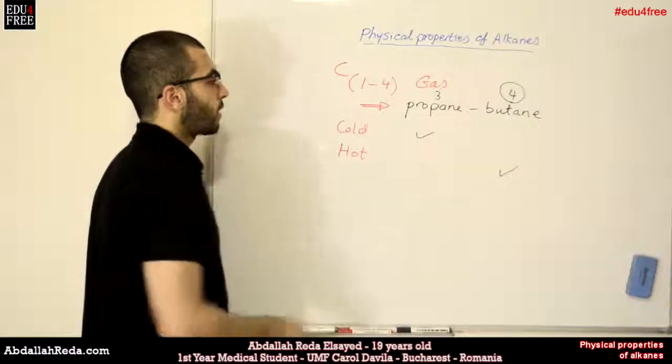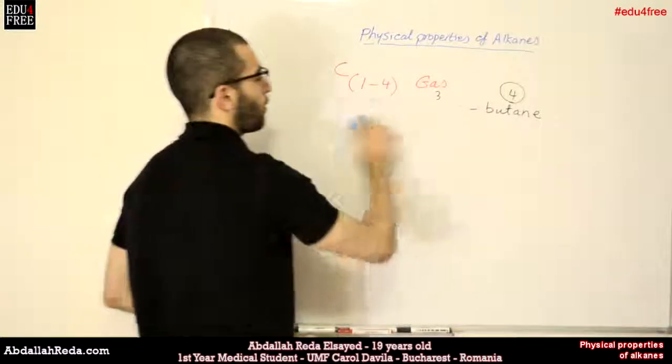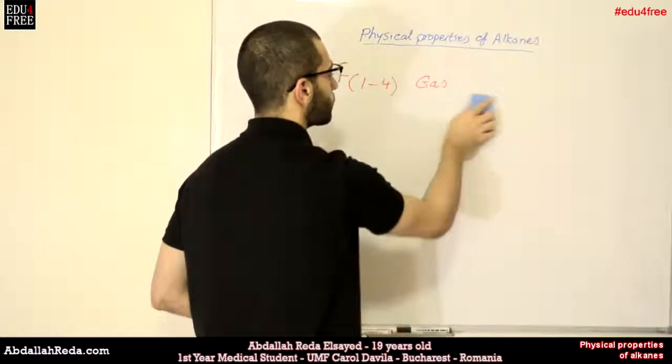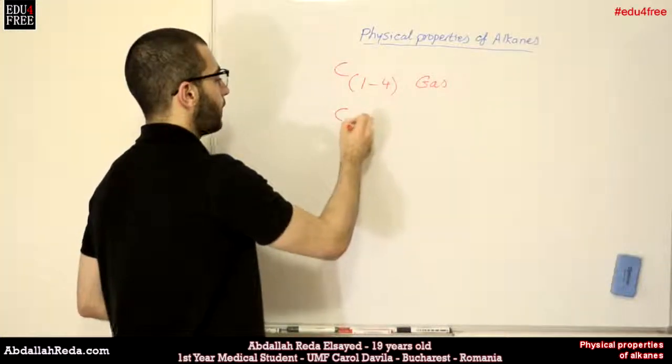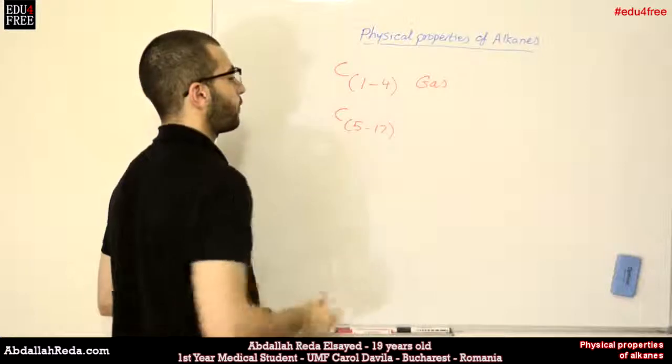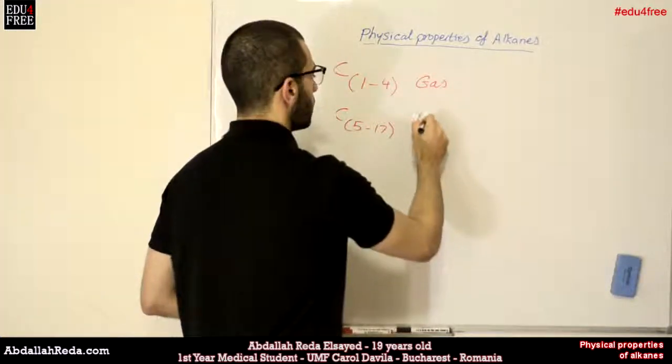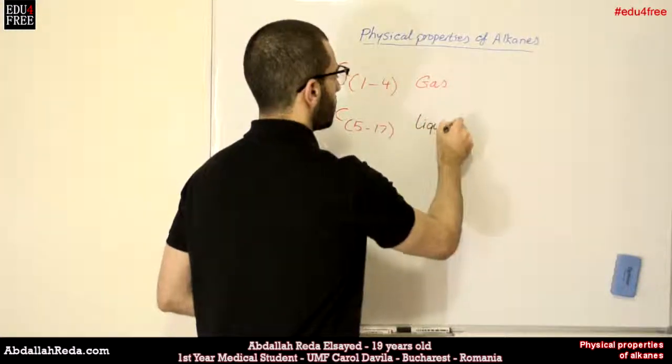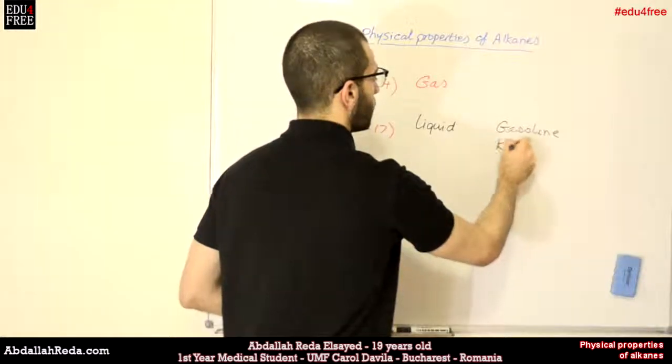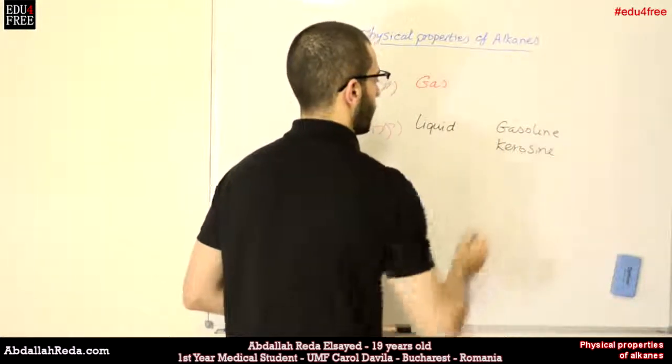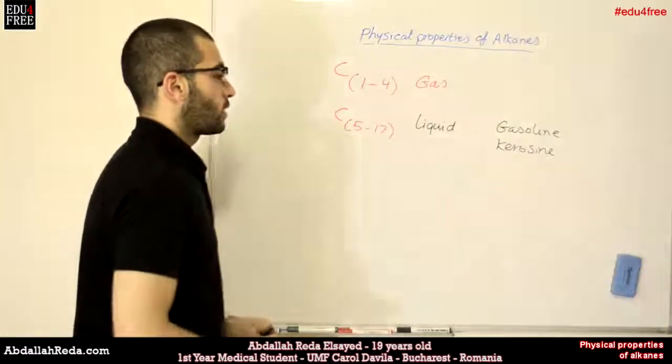That's for carbons 1 to 4. Now, from 5 to 17 we will find such alkanes in a liquid form like gasoline and kerosene, and both of them are used as fuel for cars as we already know.